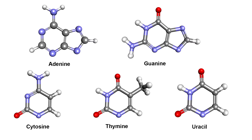The bases in DNA are adenine, cytosine, guanine, and thymine. And the bases in RNA are adenine, cytosine, guanine, and uracil. Here are the chemical structures of these bases.